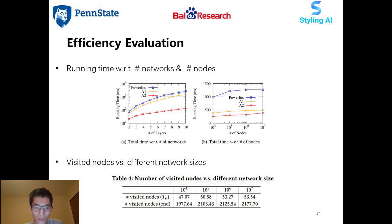We further check the number of visited nodes which have positive visiting probability scores in our method. In different sized networks, we see that in the end only a very small proportion of nodes are visited. This demonstrates the locality of our method.